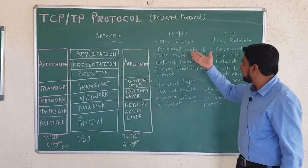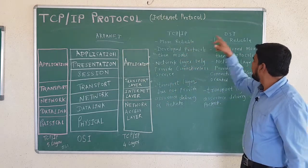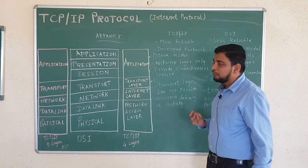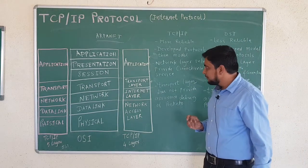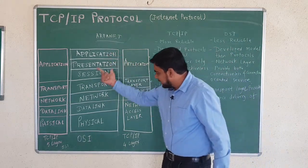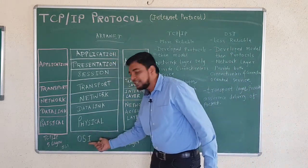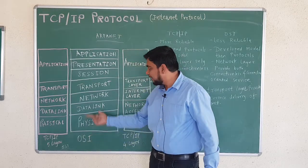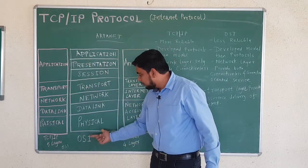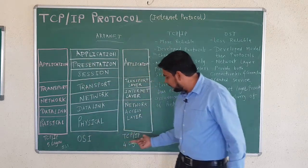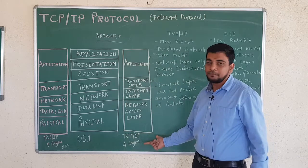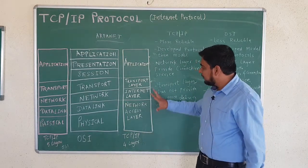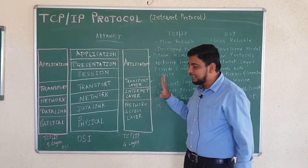There are some differences between TCP/IP and OSI. TCP/IP is more reliable. Actually, the OSI reference model is a theoretical model, but the practical model is TCP/IP. In TCP/IP, the actual practical model is used — whatever actual transmission happens in a network between two hosts, the internet uses TCP/IP protocol.